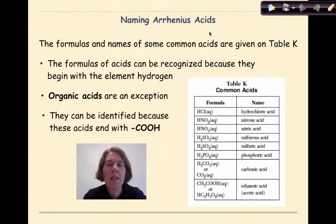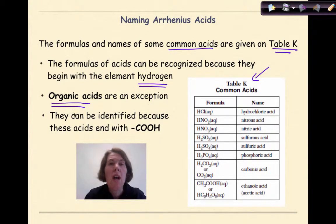Now let's talk about naming Arrhenius acids. The formulas and names of some common acids are given on table K. The formulas of acids can be recognized because they begin with the element hydrogen. Organic acids are the exception. They can be identified because these acids end with COOH, our coo group. We've talked about hydrochloric acid, nitric acid, sulfuric, phosphoric, carbonic, and ethanoic slash acetic acid. This is our organic acid example.